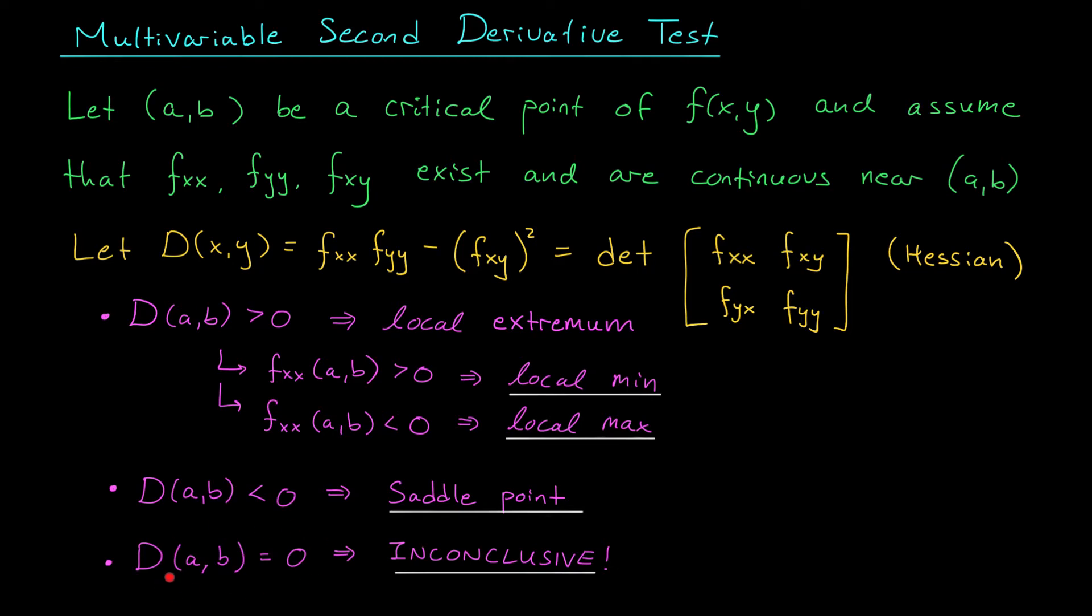Finally, it could be the case that d(a,b) is zero. Just like in calc 1, our second derivative test is inconclusive. We'd have to use different methods to decide if our point is a local min, local max, or a saddle point.